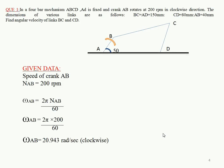First, we need to find the angular velocity of the crank. The RPM is 200, so ωab = 2πN/60 = 2π × 200 / 60 = 20.943 radian per second in the clockwise direction. Next, we need to draw the configuration diagram and then find the velocity of the input link AB.